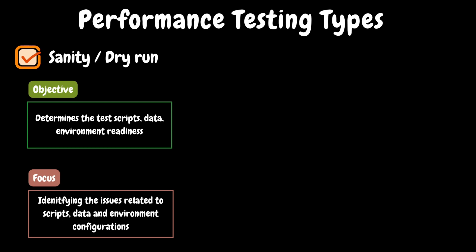The first one on our list is the sanity or dry run. This is the first test that every performance tester should execute irrespective of the scope or the objective. The main objective is to validate the readiness of the test scripts, data, and the environment. The script and data may work with a single user; however, when executed with multiple users, we may notice some issues. With this test, we can ensure scripts and data are working as expected, and also identify environmental issues like configuration issues. In general, this test will be executed with 10% of peak load with a duration of 15 to 30 minutes of steady state.